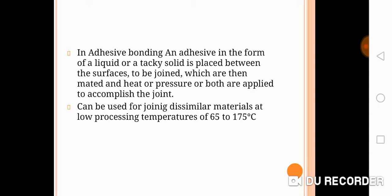This process can be used for dissimilar materials, but the processing temperature is important. Adhesive joining is usually done when the processing temperature is between 65 to 175 degrees Celsius.